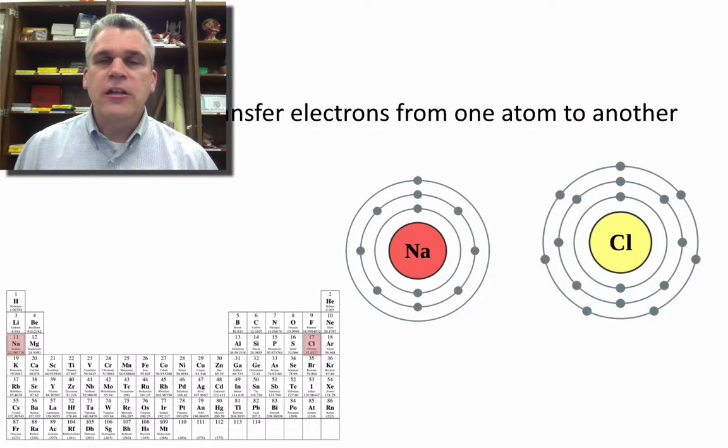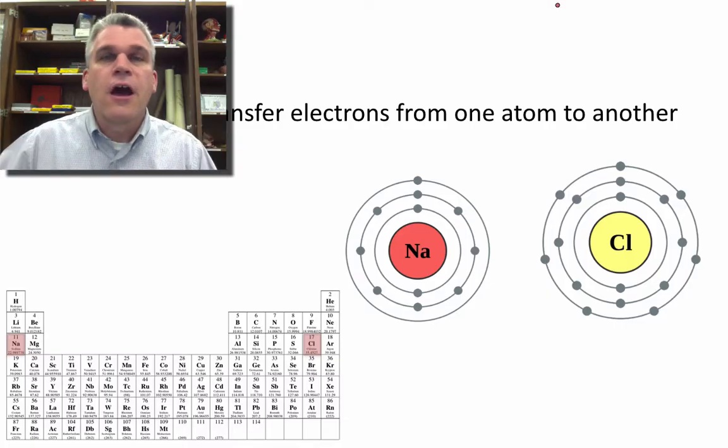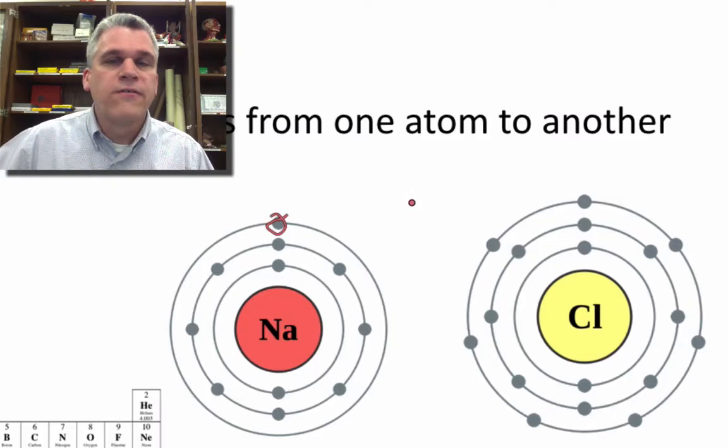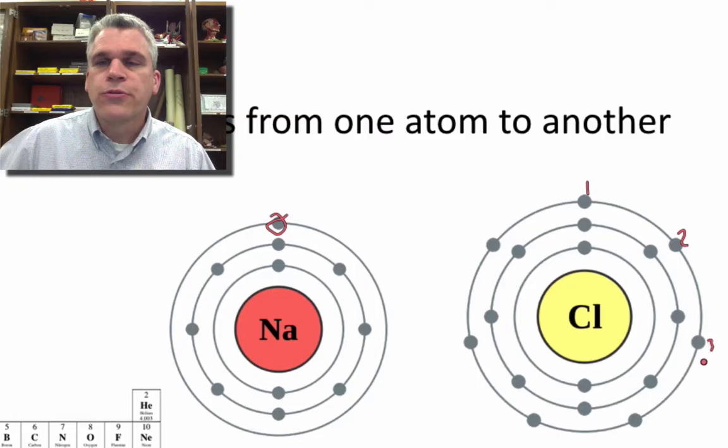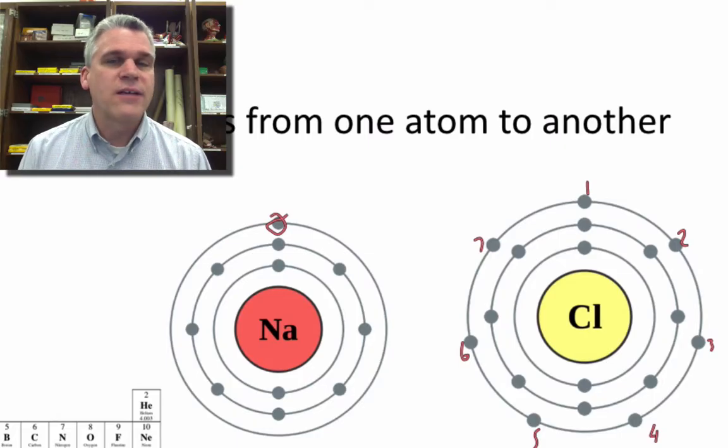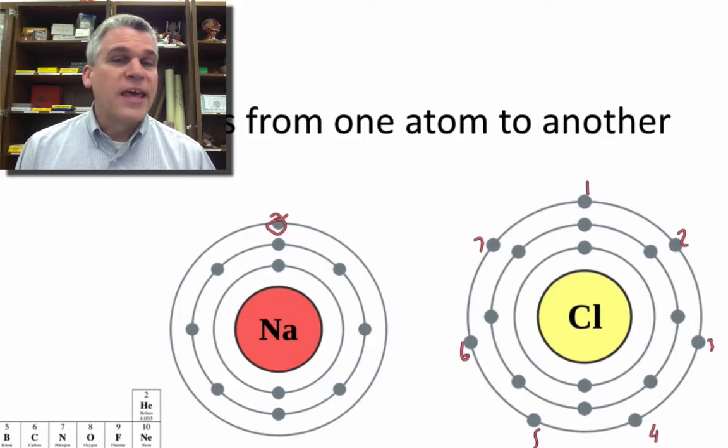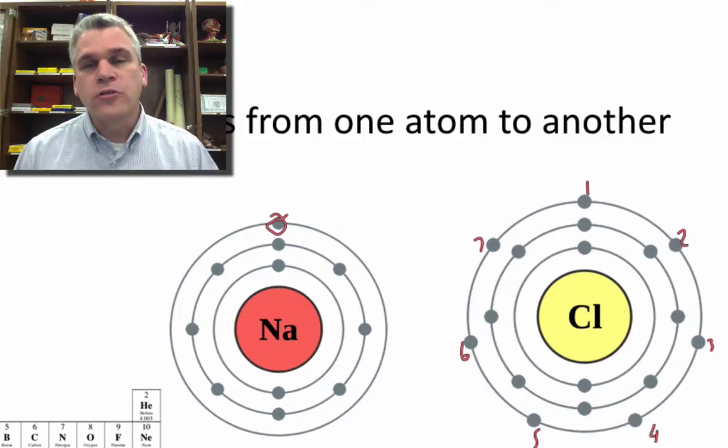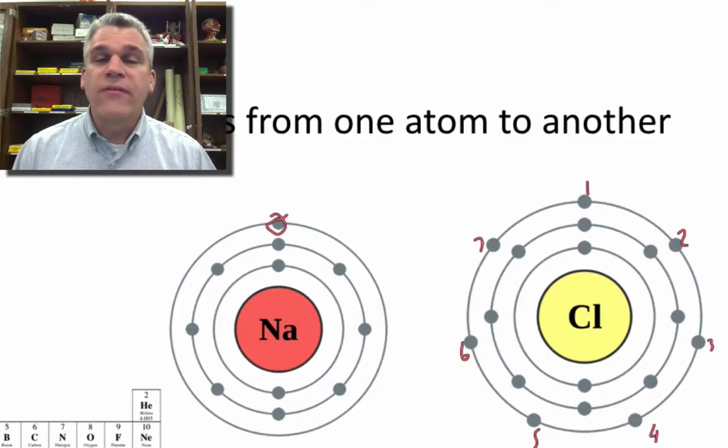Now, if we were to take a close look at the outer shell electrons, otherwise known as the valence electrons, we see that sodium only has one valence electron. Chlorine has seven valence electrons. Now, remember the octet rule, that atoms want to have a complete outer shell. That means they need eight electrons in the outer shell. Chlorine only needs one more. Sodium, if it could get rid of that one, then it would have only two shells, and then it would have a complete outer shell.